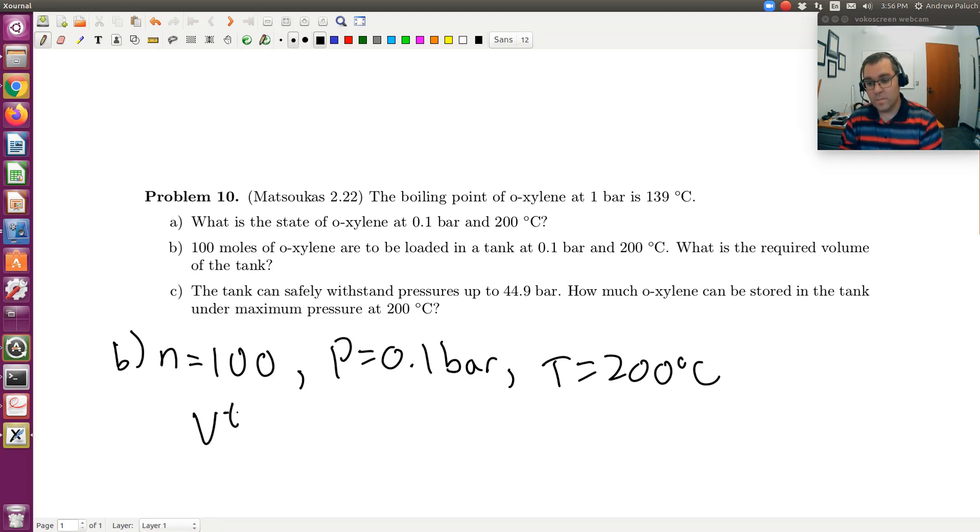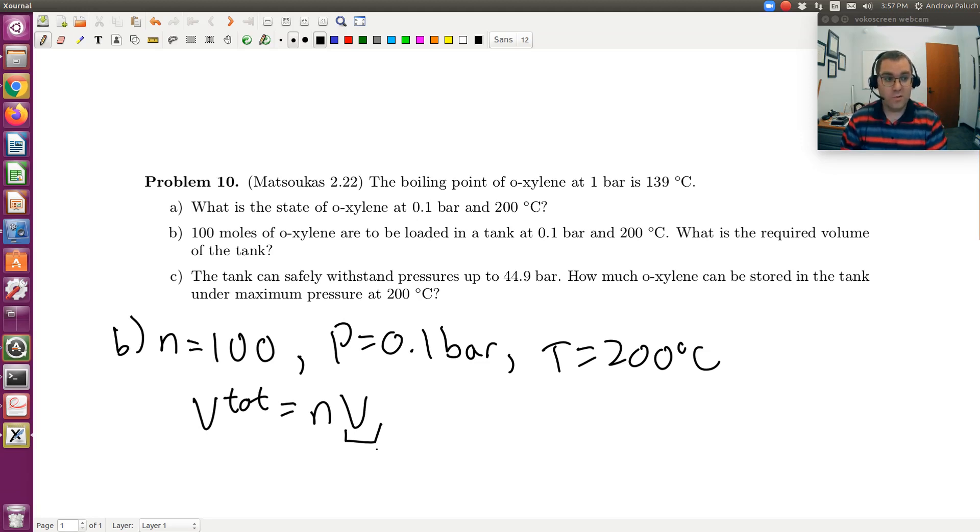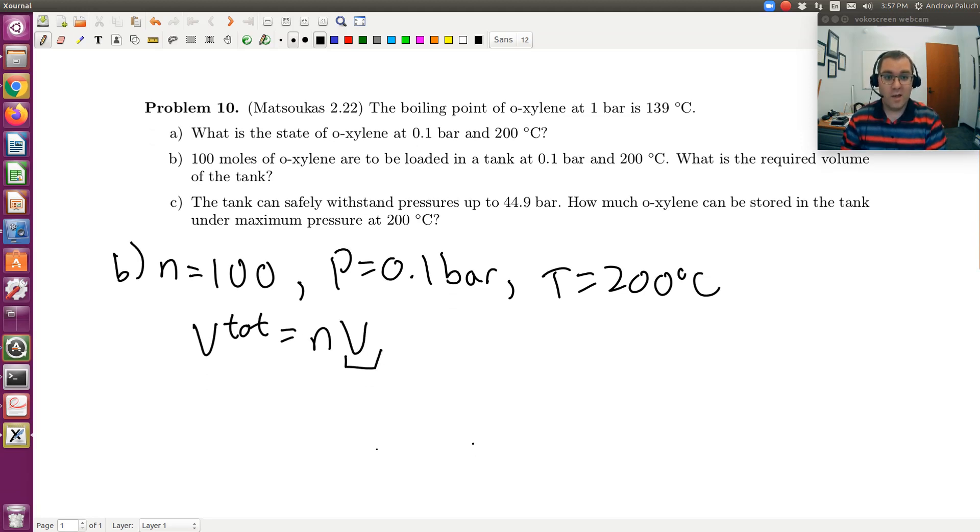V total will just be equal to N times V, where V would be my molar volume. We know N, and so the key then is going to be to calculate V. So how do you go about doing it? You could use the Lee-Kessler tables, or as even a first estimate here, since I'm at low pressures, you might even think about using the ideal gas equation of state.